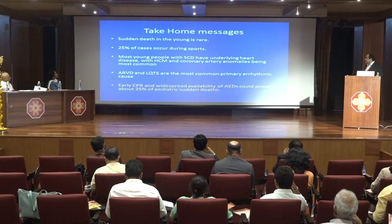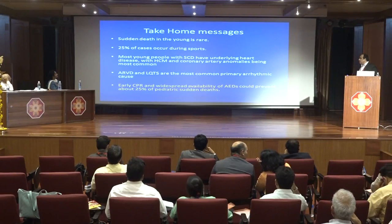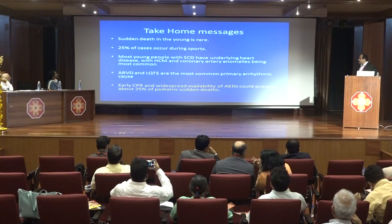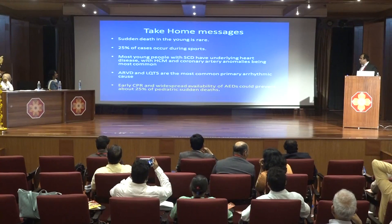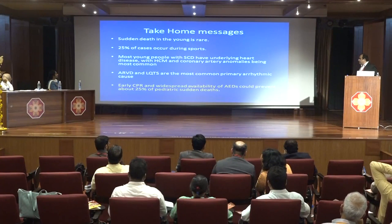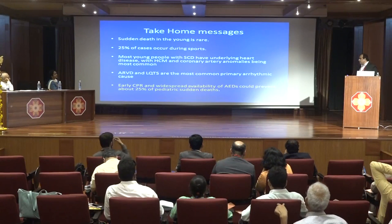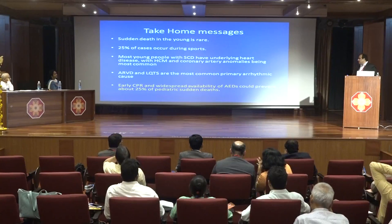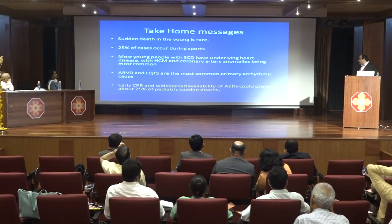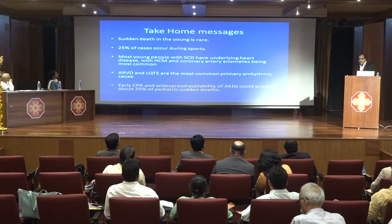Take-home messages: Sudden cardiac death in the young is rare; 25% occurs during sport. Most young children with SCD have underlying heart disease, mainly coronary artery abnormalities and hypertrophic cardiomyopathy. Arrhythmogenic RV dysplasia and long QT syndrome are the most common primary arrhythmic causes. Early CPR and widespread availability of AEDs could prevent about 25% of pediatric sudden deaths.